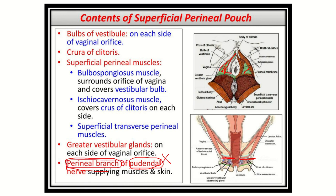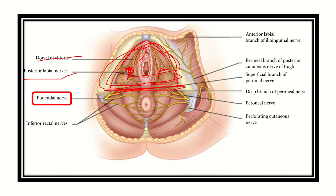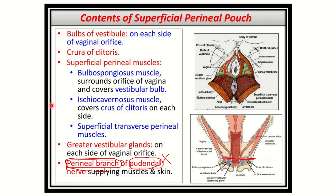The pudendal nerve itself is NOT directly located in the superficial perineal space. The pudendal nerve is located on the outer side and gives off branches. The posterior labial nerve and vessels are located in the superficial perineal space, but not the pudendal nerve trunk itself. So the contents are: bulb of vestibule, crura of the clitoris, superficial perineal muscles, greater vestibular gland, and the perineal branch of the pudendal nerve.